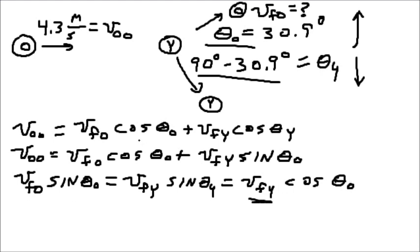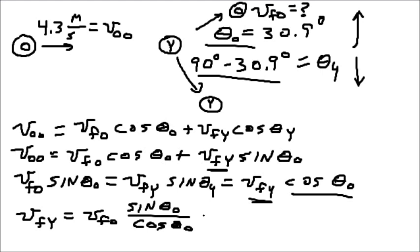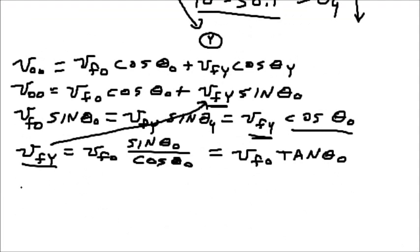Now, we can solve for this and then substitute it in here, just by dividing through both sides of this equation by cosine theta orange. And of course, cosine over the sine is the tangent. Then we take this and substitute it in there. So we get the original velocity of the orange disk equals the final velocity of the orange disk cosine theta orange plus, now we do the substitution.